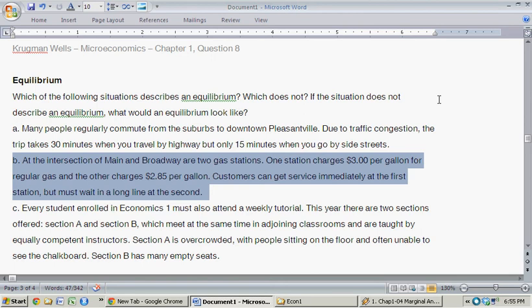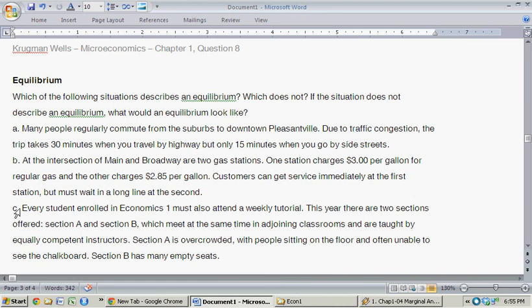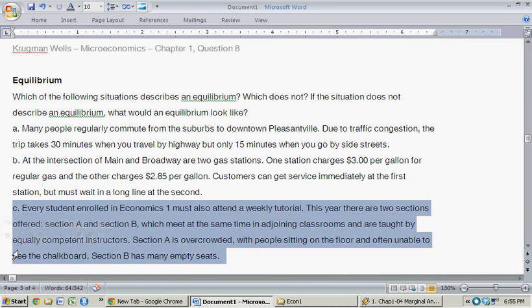And then finally, question C. Every student enrolled in Econ 1 must attend a weekly tutorial. This week there are two sections offered, section A and B, which meet at the same time in adjoining classrooms and are taught by equally competent instructors.